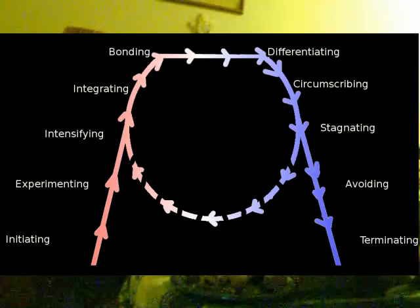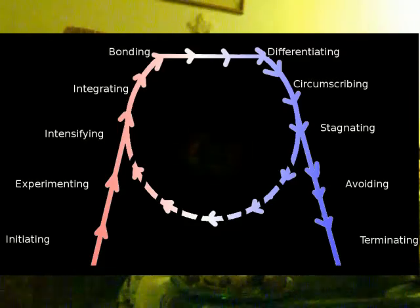Then comes the bonding stage. The more formal the bonding, the more difficult it will be for the relationship to terminate if you come to that stage. So the bonding stage could be marriage, could be engagement, could be moving in together, could be starting a business together. There's all kinds of things that happen at the bonding stage. But no matter what it is, they make it formal, and that's what makes it the bonding stage.